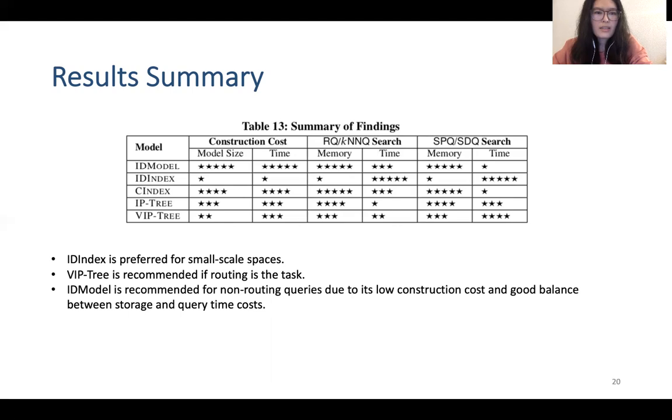So in short, ID index is preferred for small scale spaces. And VIP tree is recommended if routing is the task. ID model is recommended for non-routing queries due to its low construction cost and good balance between storage and query time cost.